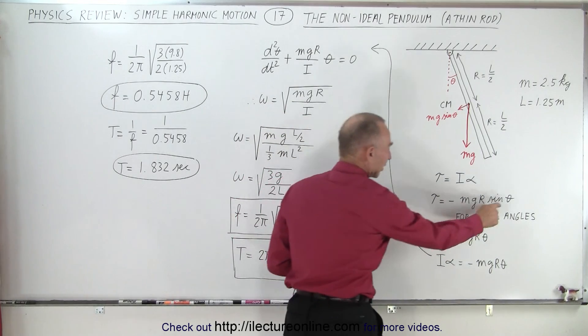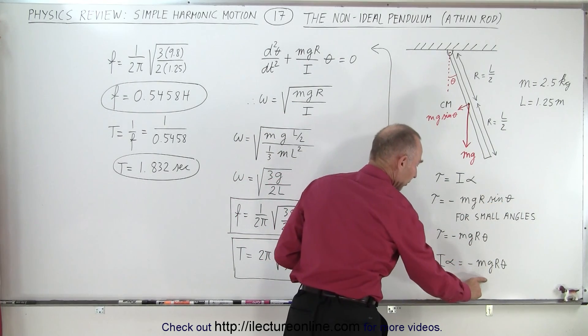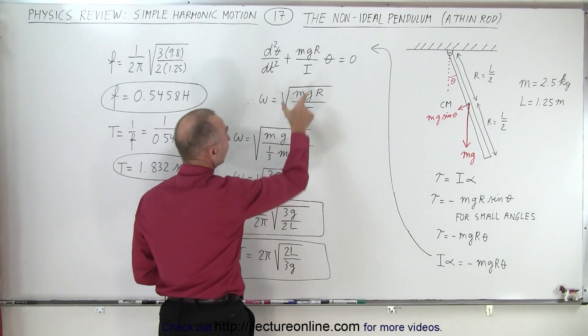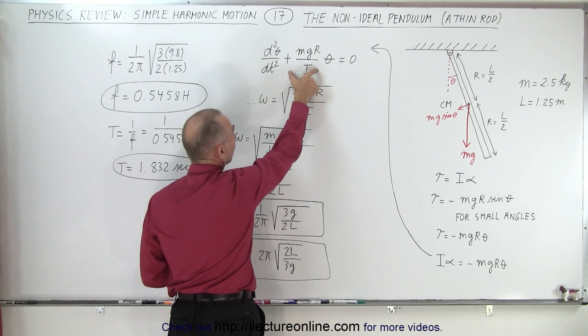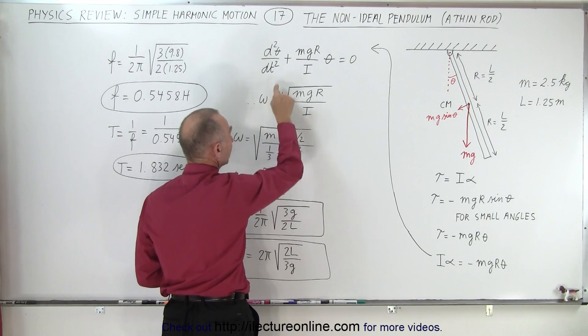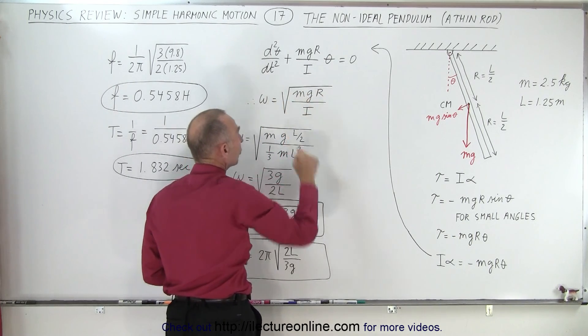For small angles, the sine theta equals theta, and so this becomes our differential equation, turn into a format that we're familiar with, and then we can see that this here is equal to omega squared. So omega, the angular frequency of oscillation, will be the square root of mg r over the moment of inertia.